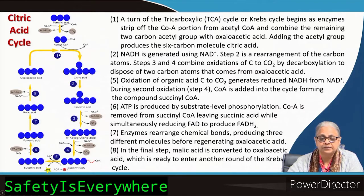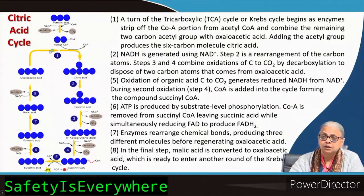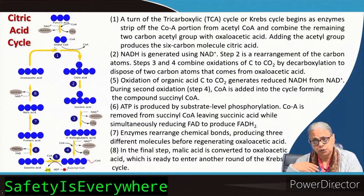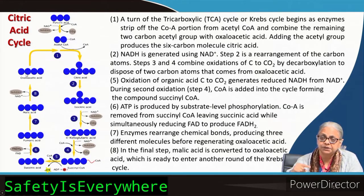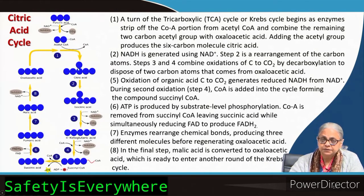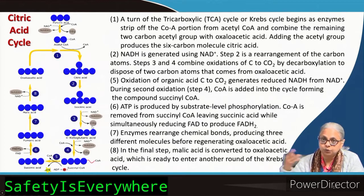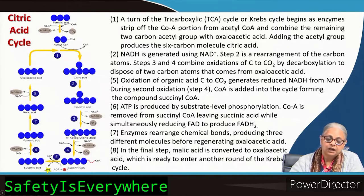Acetyl-CoA enters this cyclic set of reactions. Coenzyme A is released and the acetyl group (C2) attaches to oxaloacetic acid (C4), the last intermediate in the cycle, to form citric acid (C6). Citric acid is rearranged to isocitric acid, which loses one carbon — NAD+ is converted to NADH — giving alpha-ketoglutaric acid, a C5 compound.